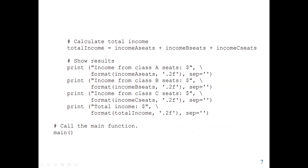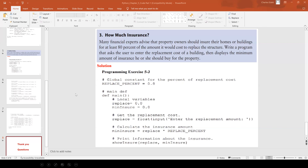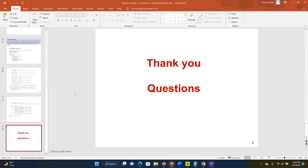We also use the format function to format our outputs — in this case, two decimal places for each income value. That will be the conclusion for this lab work. We looked at these two problems. Go through them, and if you have any questions, we meet in class or you can send an email. Thank you.